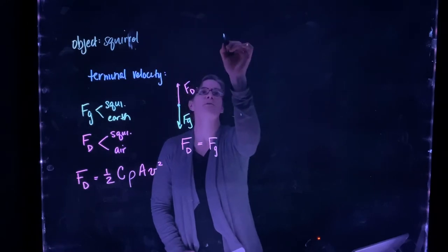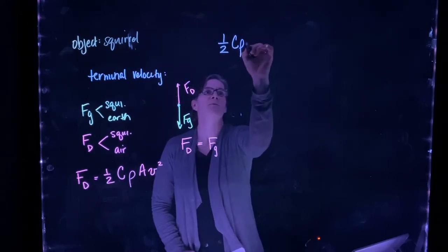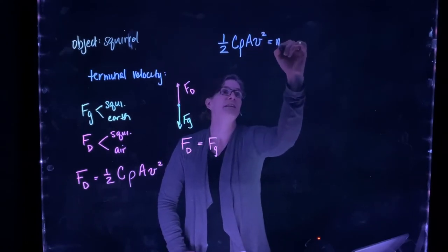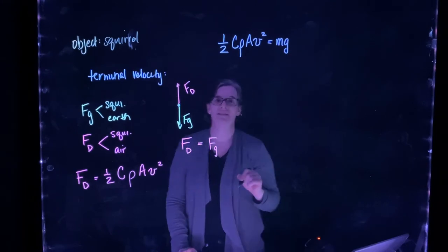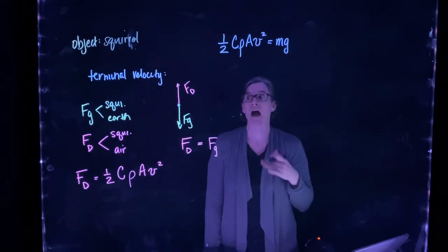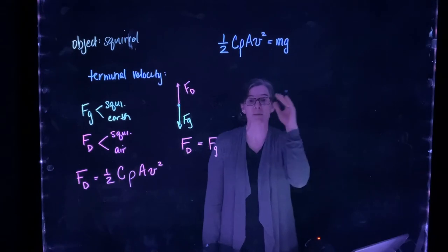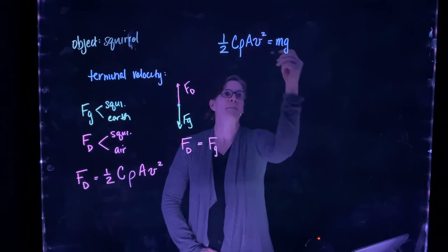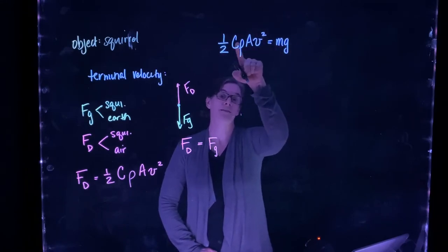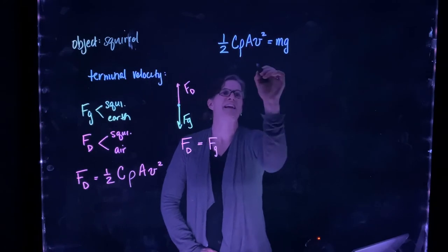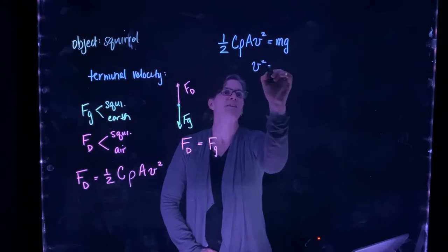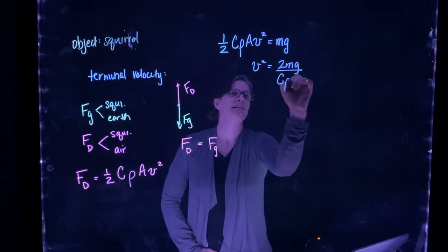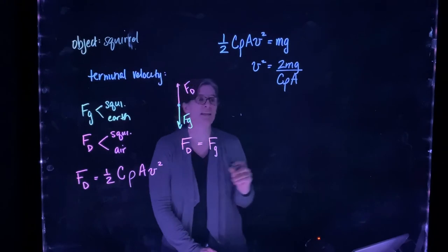So let's set that relationship up. We have the drag force, which is one half c times rho times the area times the velocity squared, has to equal the force of gravity, which we know is equal to mg.